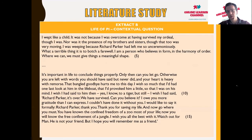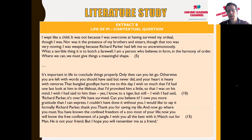We now move on to the second extract. Various line numbers are indicated for reference when answering the questions that follow. The extract reads: 'I wept like a child. It was not because I was overcome at having survived my ordeal, though I was, nor was it the presence of my brothers and sisters, though that too was very moving. I was weeping because Richard Parker had left me so unceremoniously. What a terrible thing it is to botch a farewell. I'm a person who believes in form, in the harmony of order. Where we can, we must give things a meaningful shape.'